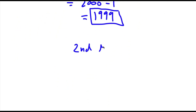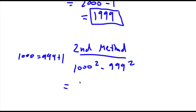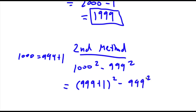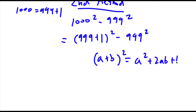Now my second method to solving this problem: we again start with 1000 squared minus 999 squared. Last time I replaced 999 with 1000 minus 1. This time I'm going to replace 1000 with 999 plus 1. So now I have (999 plus 1) squared minus 999 squared. Now if I have something in the form (a plus b) squared, this is equal to a squared plus 2ab plus b squared.